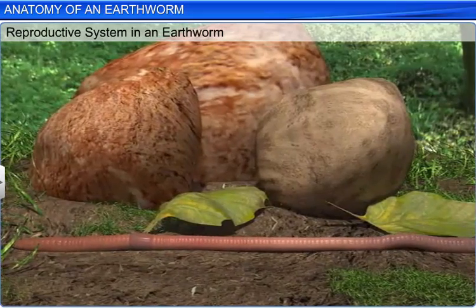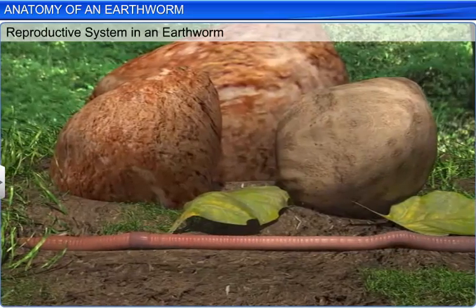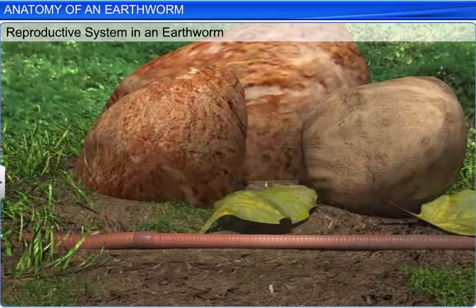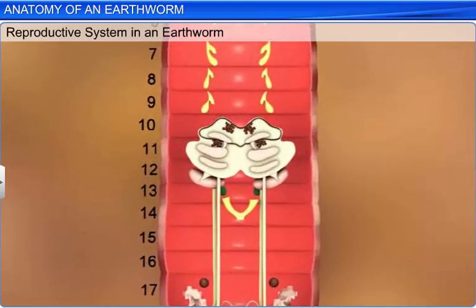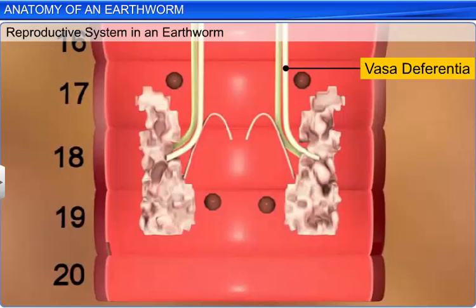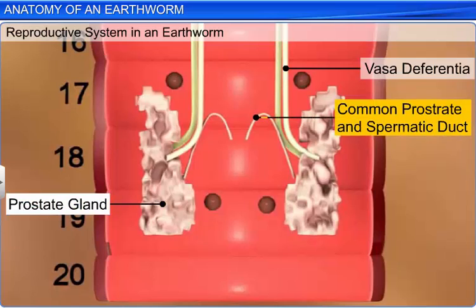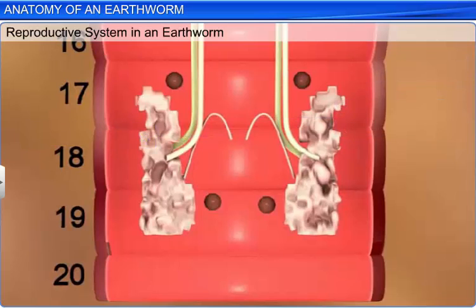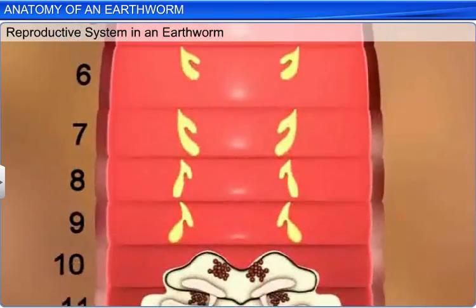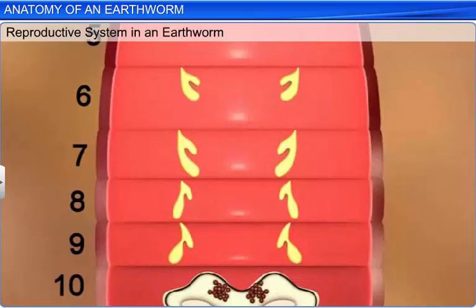Finally, let's take a look at the reproductive system. The earthworm is a hermaphrodite, which means that both male and female reproductive systems are present in the same individual. The male reproductive system consists of two pairs of testes in the 10th and 11th segments with their vasa deferentia running up to the 18th segment. Here, the vasa deferentia and the duct of the prostate gland join to form a common prostate and spermatic duct, which opens to the exterior through a pair of male genital pores. A pair of accessory glands is found in each of the 17th and 19th segments. Also, each segment from the 6th to the 9th bears a pair of spermatheca, which receives and stores spermatozoa during copulation.